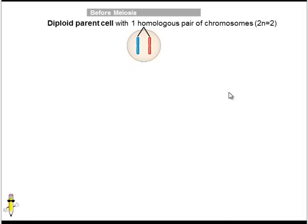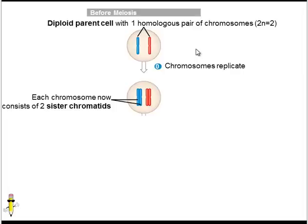Let's start with an overview. Here is our parental cell — this is the original cell that's going to give rise to the gametes. This is the simplest cell possible; this cell only has two chromosomes, one homologous pair. So this cell is said to be diploid because it has a pair of chromosomes. Before meiosis can begin, DNA replication must occur. This is important because we have to double the chromosomes so that the gametes get a copy of the genetic information.